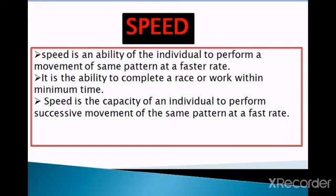Speed is a very important component of training. Speed depends upon heredity, and fast-twitch muscle fibers play an important role — athletes with more fast-twitch fibers have more speed and are able to do speed work. To improve speed, a runner must improve reaction time, acceleration, and speed endurance. Speed is defined as the ability of an individual to perform a movement of the same pattern at a faster rate.